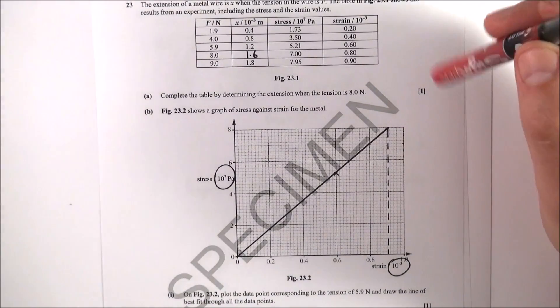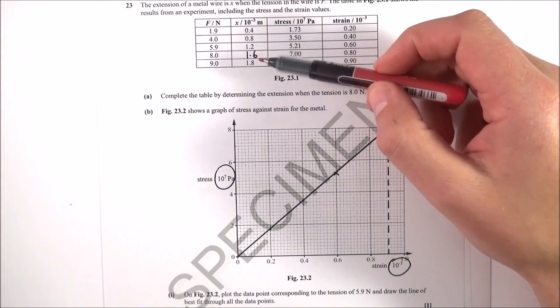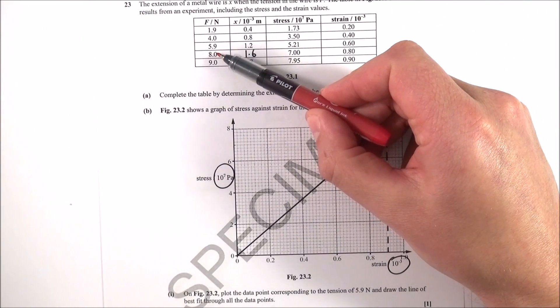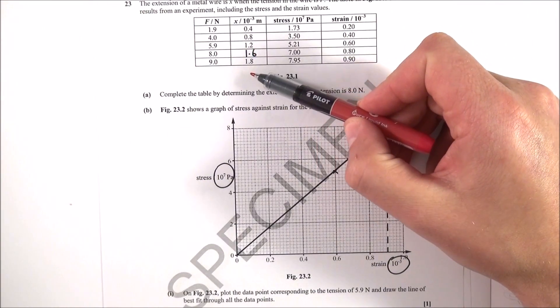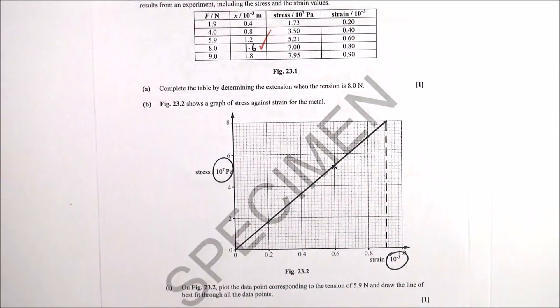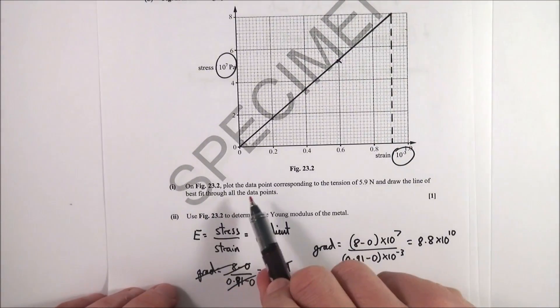Question 23 is about materials. The first part is an easy question - just put in the missing number. What we see is that every time it goes up by one, this goes up by 0.2. So if that's 1.8, that must be 1.6, and that's my first mark.